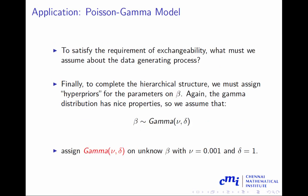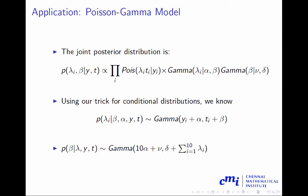We decided to assign a gamma distribution on beta, gamma(nu, delta) on beta. We choose nu equal to 0.001 and delta equal to 1. The joint posterior of the distribution turns out to be lambda_1 to lambda_n—in this case lambda_1 to lambda_10—and beta given y and t. This is the likelihood part times gamma(lambda_i | alpha, beta) times gamma(beta | mu, delta).